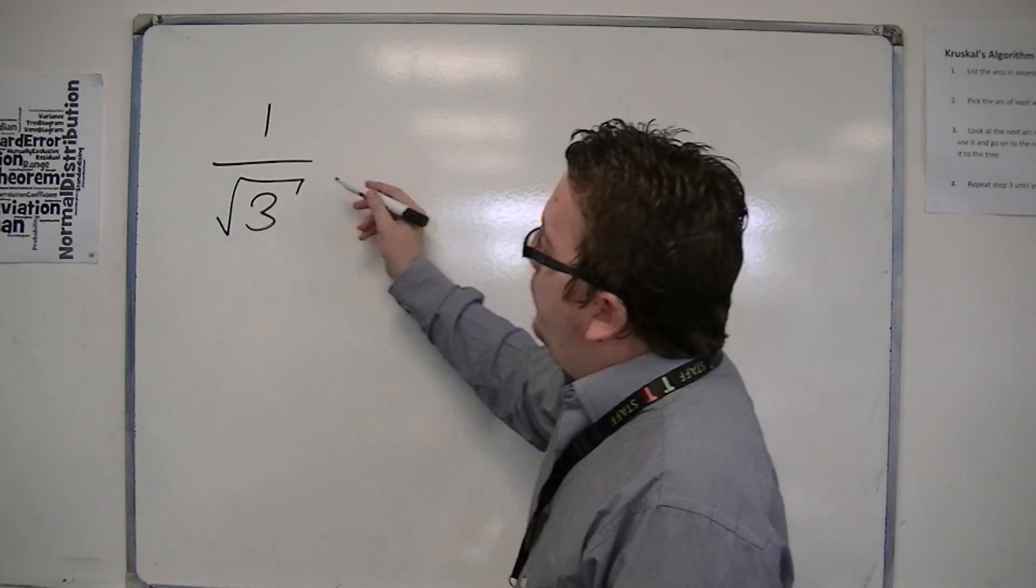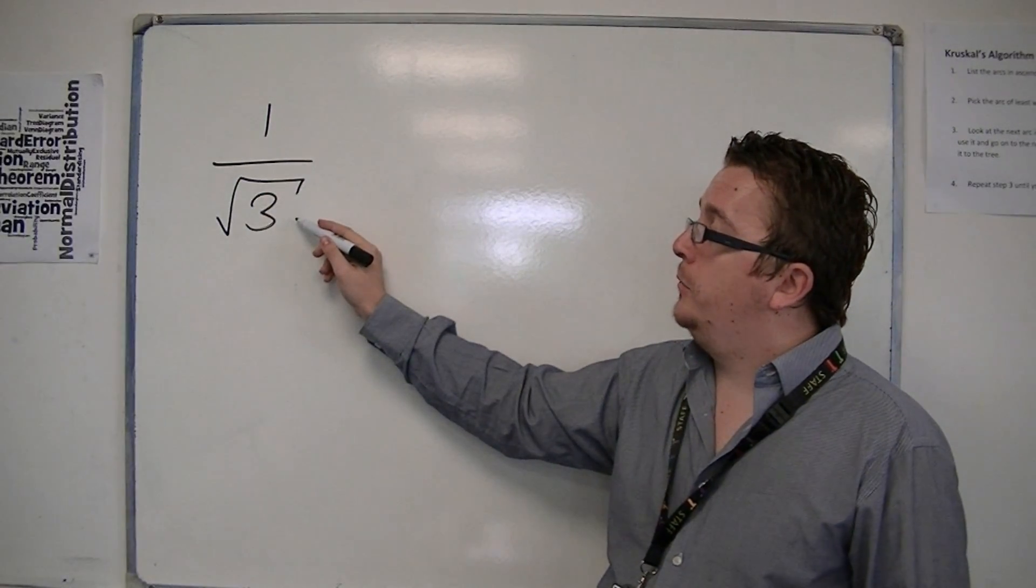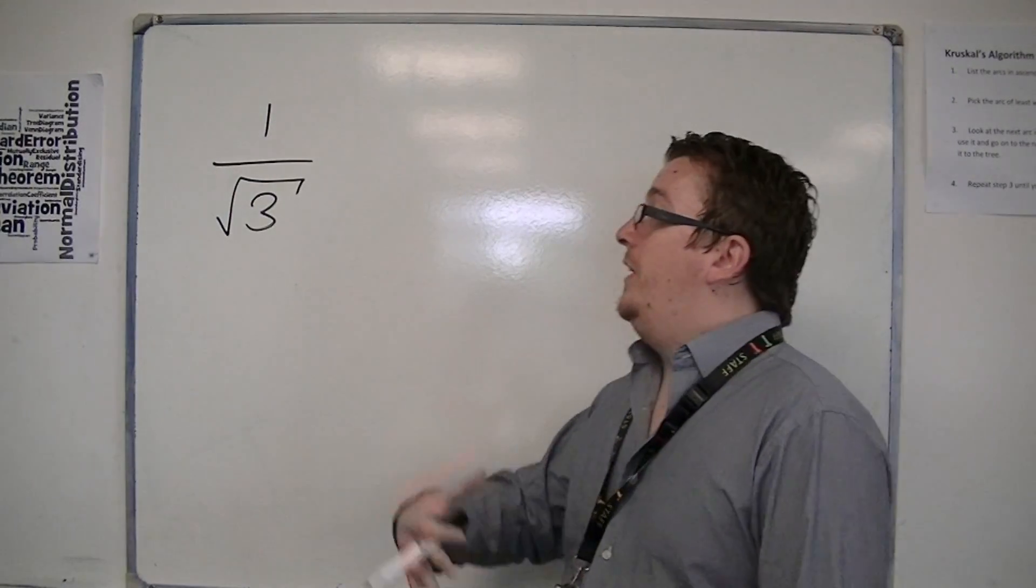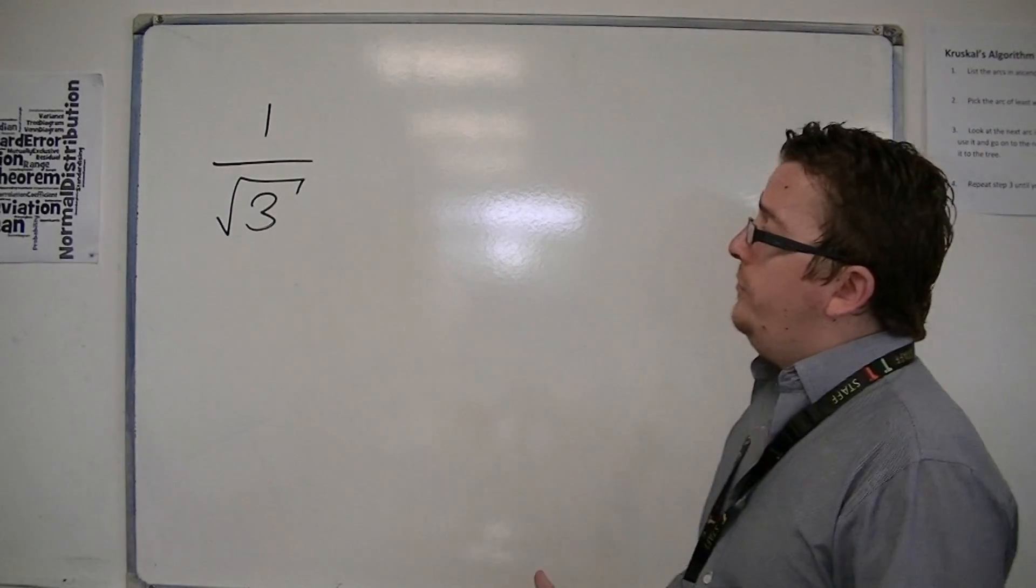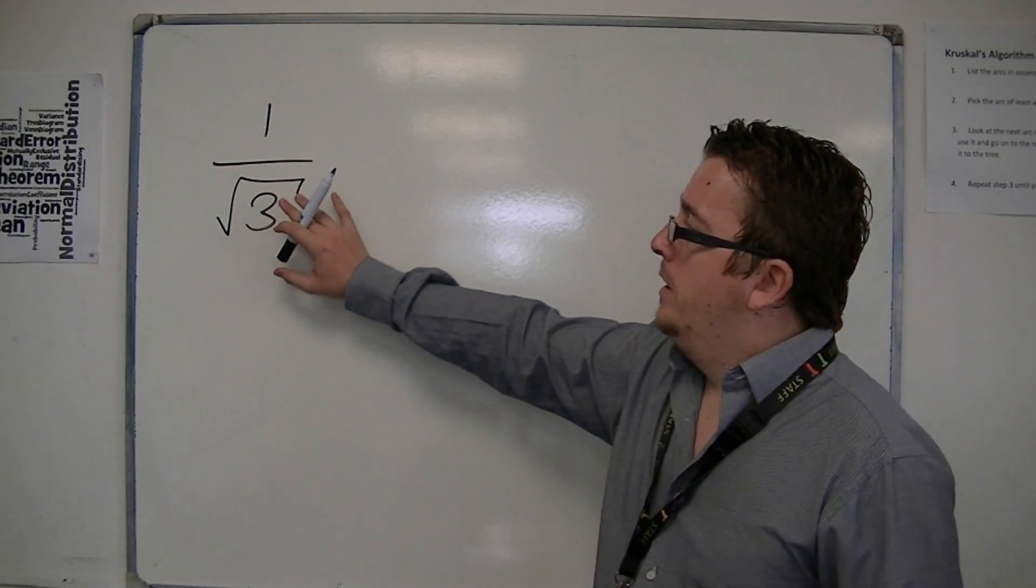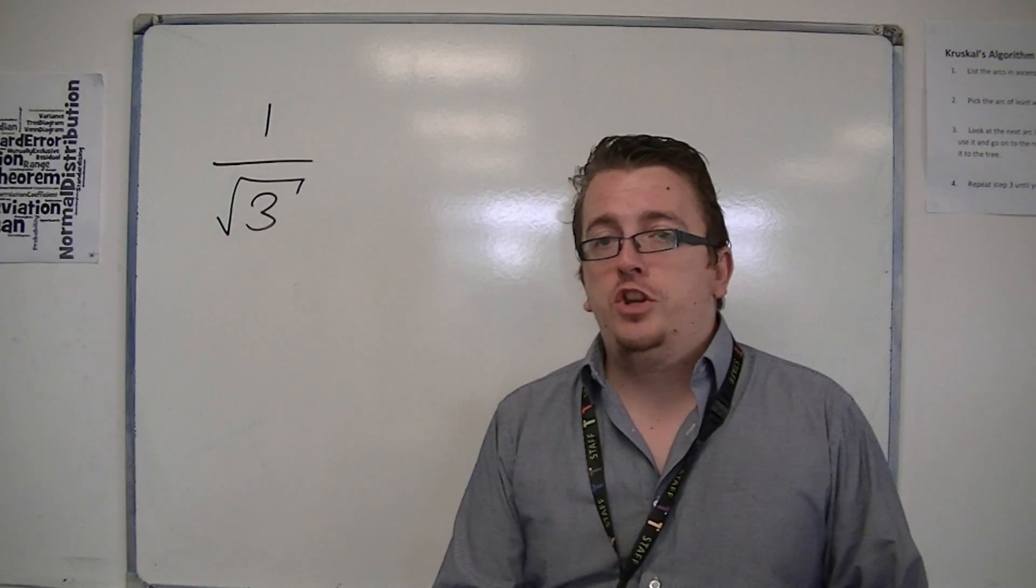Okay, so this is irrational, this denominator that we have. And we want to rationalise the denominator, because things like 1 over root 3 are quite difficult to work with. So we want to make sure that the denominator is rational, but what we're going to get, obviously, is an irrational numerator.